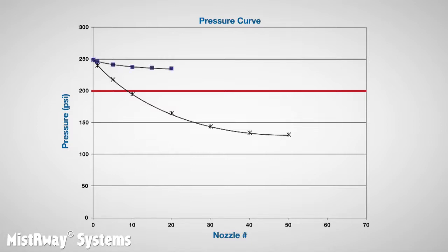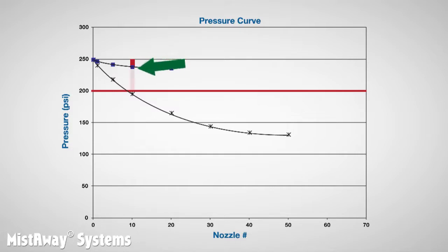For more insight, let's add another line to our chart. This time we took measurements on 20 nozzles in series and plotted its pressure curve. Comparing the pressure at nozzle number 10 for each run: for the 20-nozzle run, the pressure drop between the pump and nozzle number 10 is only about 10 psi. For the 50-nozzle run, it's closer to 60 psi — yet both nozzles are the same distance from the pump: 100 feet. It turns out that pressure drop in a segment of tubing increases as the flow through that segment increases. The more nozzles downstream, the higher the flow and the greater the drop in pressure.